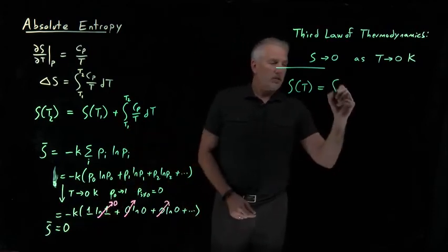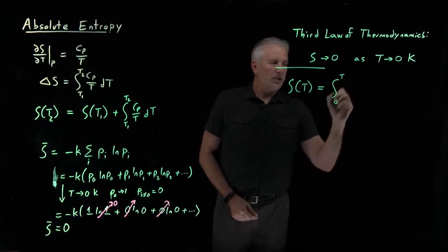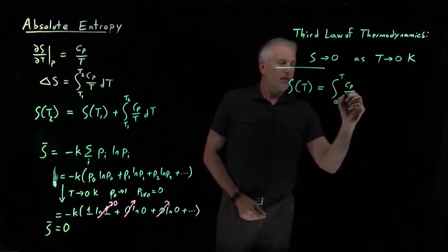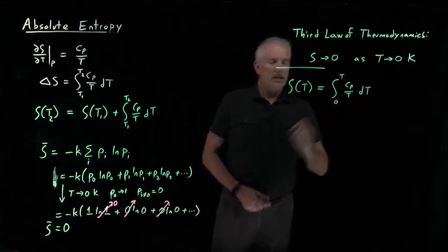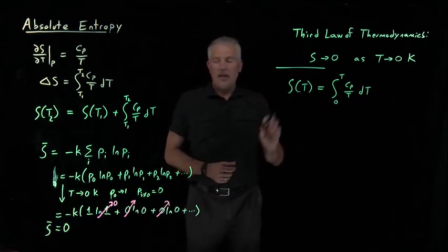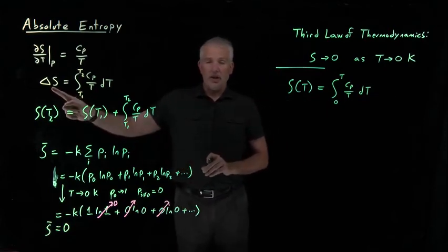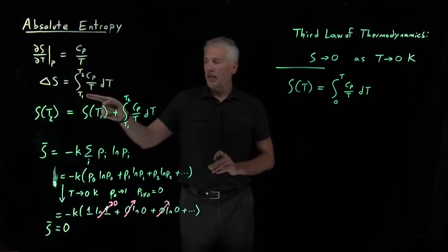plus the integral from zero Kelvin up to the temperature I'm interested in, heat capacity over T, dT. So it turns out I can know not just the change in the entropy, in changing the temperature from T1 to T2,